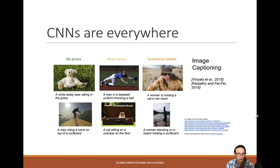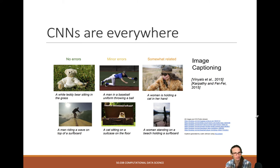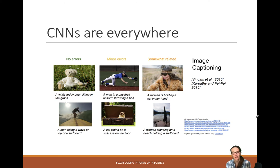Here's an example of image captioning, where you give an image to your neural network and try to predict a textual description of what is happening in the image. On the left, we have perfectly errorless predictions: 'A white teddy bear sitting in the grass,' 'A man riding a wave on top of a surfboard.' Some minor errors in the center: 'A man in a baseball uniform throwing a ball' — almost right, just a subtle difference. 'A cat sitting in a suitcase on the floor' — not really a floor, but pretty good. This work is from 2015 and it's pretty solid — it's a very interesting and not easy task.